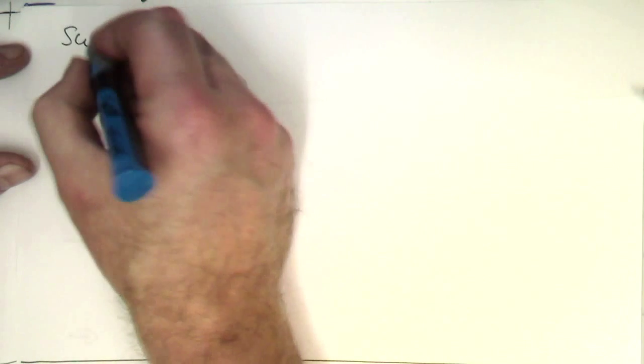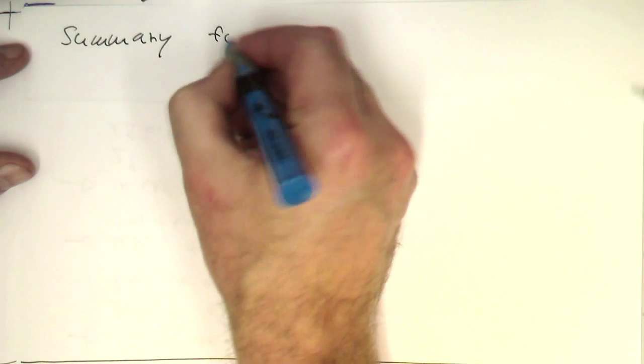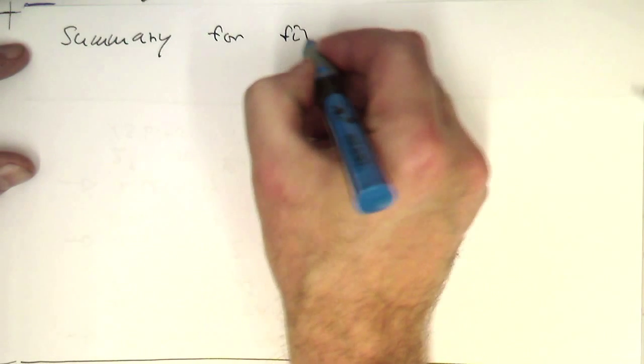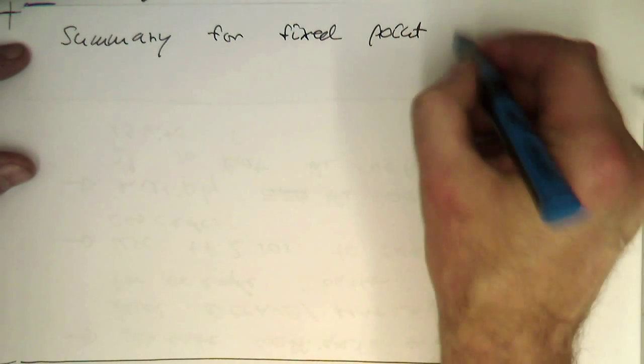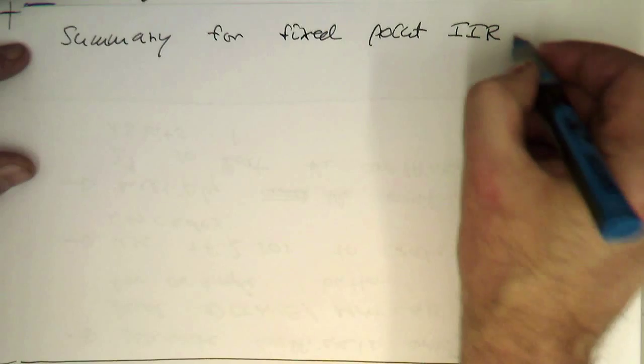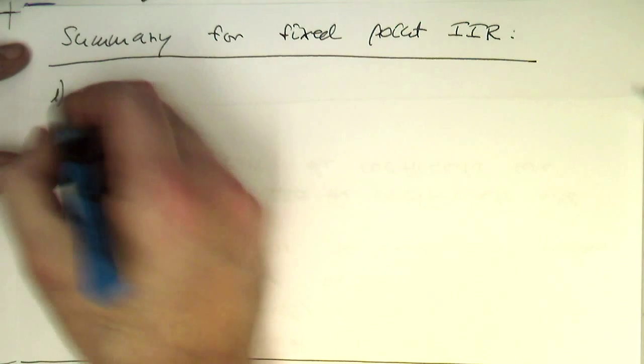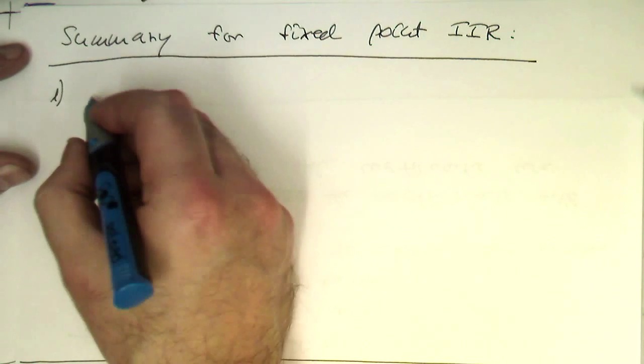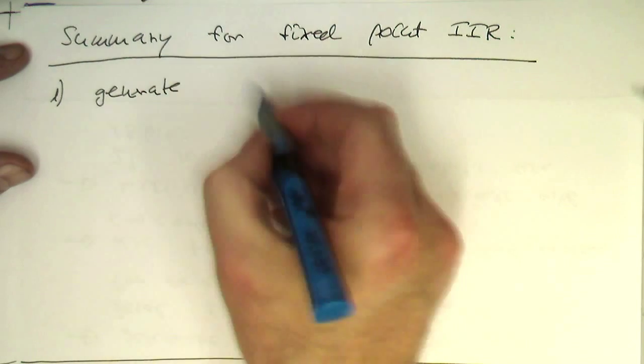The summary for fixed point IIR. So the first step is generate coefficients.